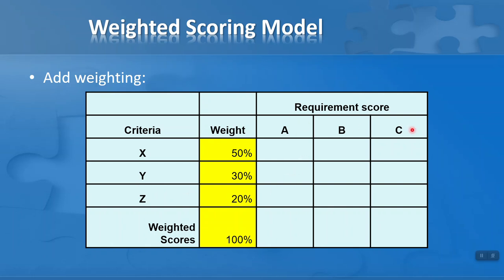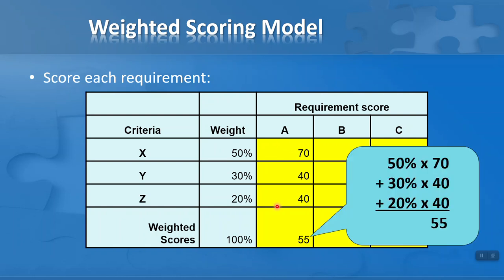Then we score the three different requirements. For Requirement A, I'm giving it a score out of 100: 70 for Criteria X, 40 for Criteria Y, and 40 for Criteria Z. For Requirement B, the scores are 45, 85, and 80. For Requirement C, they're 40, 30, and 50. It's not easy to figure out which one we should choose, so we need a weighted score. Across the bottom, I've got the weighted scores and values. Let's see how they're worked out.